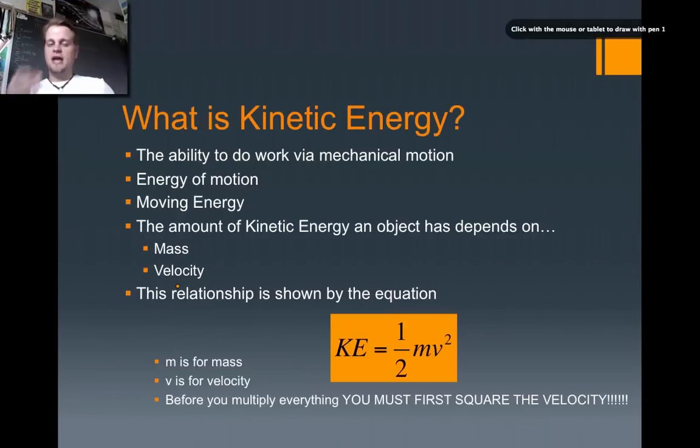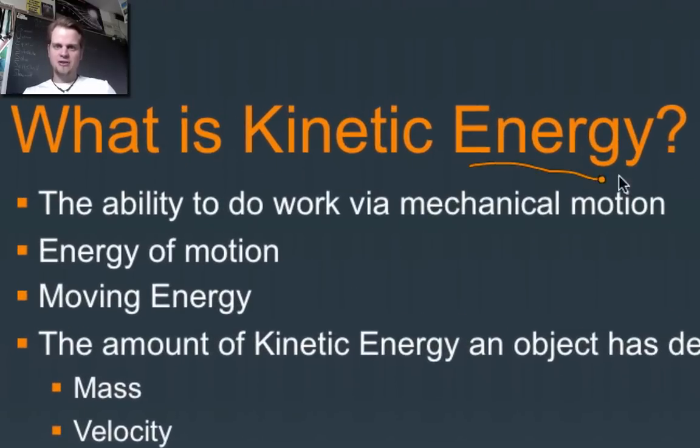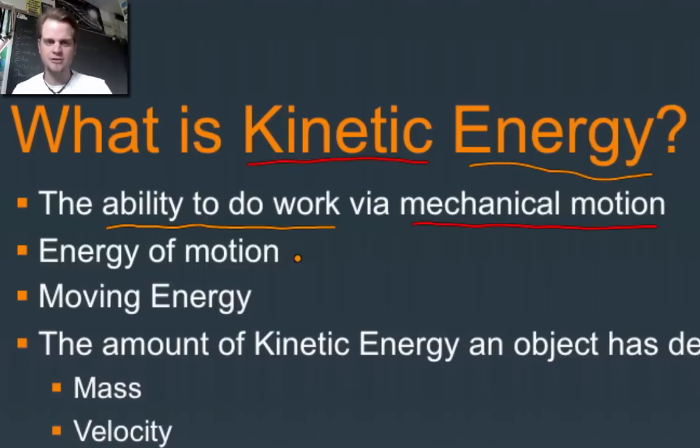All right, what is it? How do we define it? Well, since it's energy, it's the ability to do work. But the kinetic part comes from mechanical motion. Kinetic means mechanical motion. It's something that's moving. That's why over here, you see that we called it the energy of motion. Some people might call it moving energy. If something is moving, it has kinetic energy. This pen has kinetic energy. This entire time, it's got kinetic energy. This remote, it's got kinetic energy. Me, I've got kinetic energy. Anything that's moving has kinetic energy.